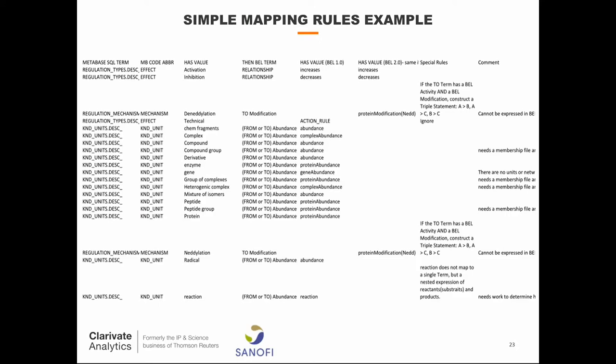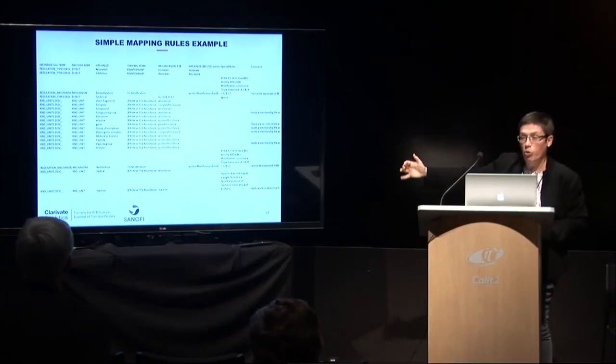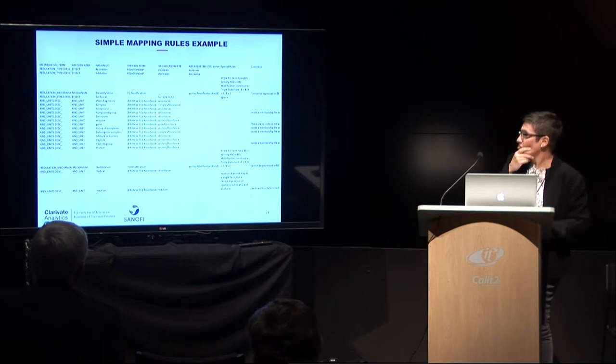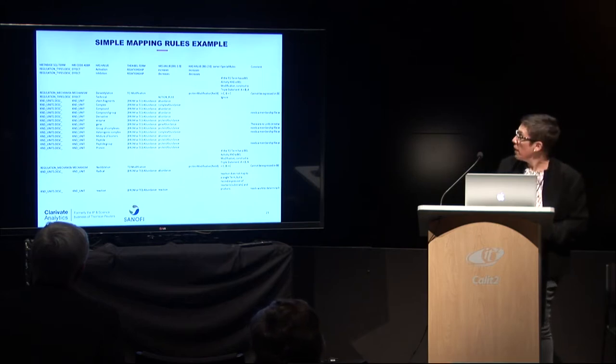Here's an example of a simple mapping — just a screenshot of an Excel spreadsheet. At the very top column, we have the actual SQL term, because MetaBase sits in a SQL database. Then there is a 'has value' column. So we say: if you run your SQL query and the value is 'activation,' 'inhibition,' and so on, then the BEL term is a relationship. If it's an activation, then your relationship is an 'increased' relationship. If it's an inhibition, it's a 'decreased' relationship. There are a few dozen of these relatively simple mappings between relational data and BEL information.